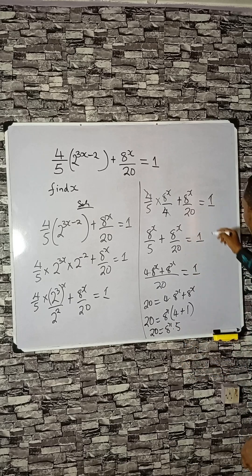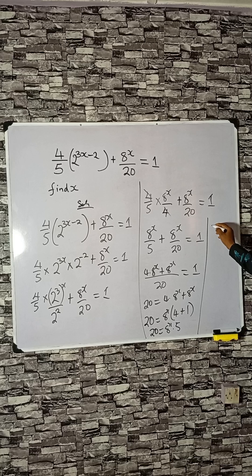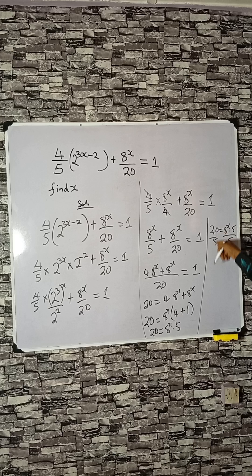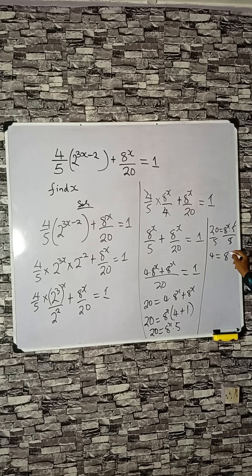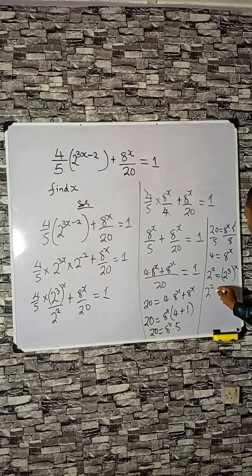We are almost there. Divide everything by 5. 20 divided by 5 is 4. 4 is 2 squared, 8 is 2 cubed raised to the power x.